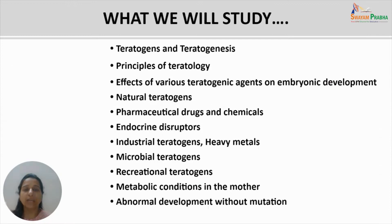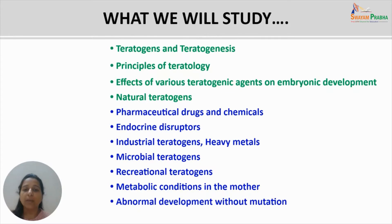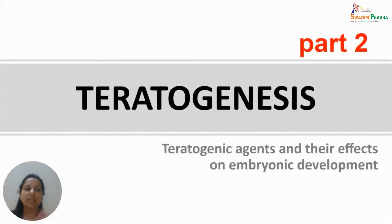In Part 1 of Teratogenesis, we studied what are teratogens and teratogenesis, what are the principles of teratology, and the effects of various teratogenic agents on embryonic development, in which we covered natural teratogens. We are currently doing pharmaceutical drugs and chemicals. We will also take up endocrine disruptors, industrial teratogens including heavy metals, microbial teratogens, recreational teratogens, metabolic conditions in the mother, and abnormal development without mutation in this second part of the lecture.